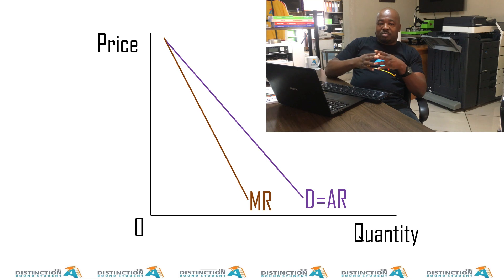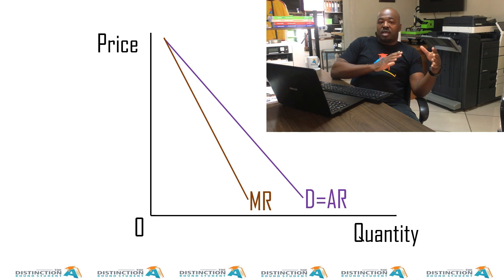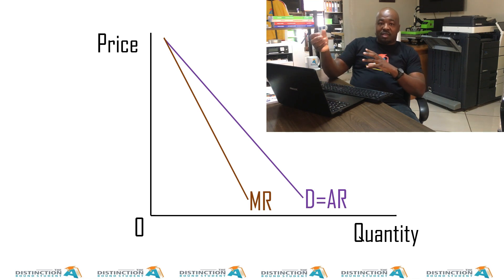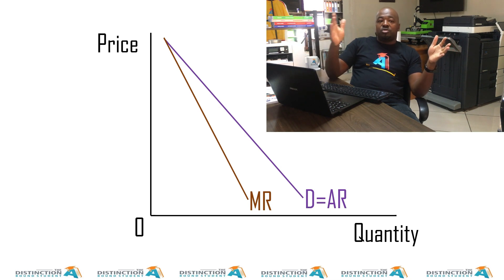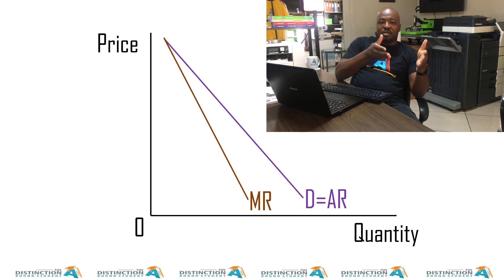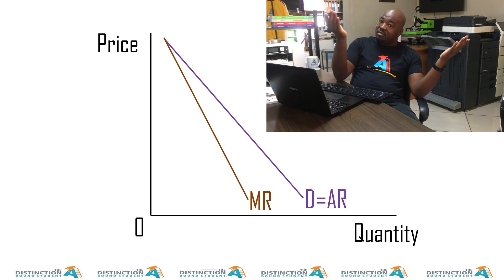There's a common question: why is the demand curve and AR equal to MR in the case of perfect competition? Well, it's equal because each additional unit is sold at the same price. When we use the formula — change in TR divided by change in quantity — we get the same answer as the price, the same answer as average revenue. So MR is equal to D and equal to AR, because each additional unit is sold at the same price.